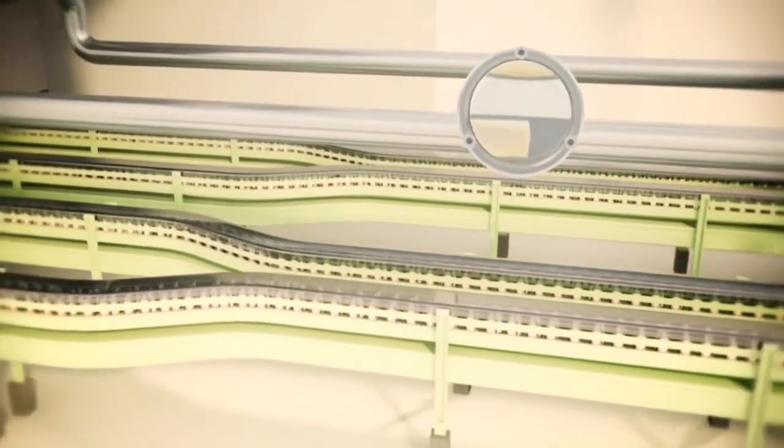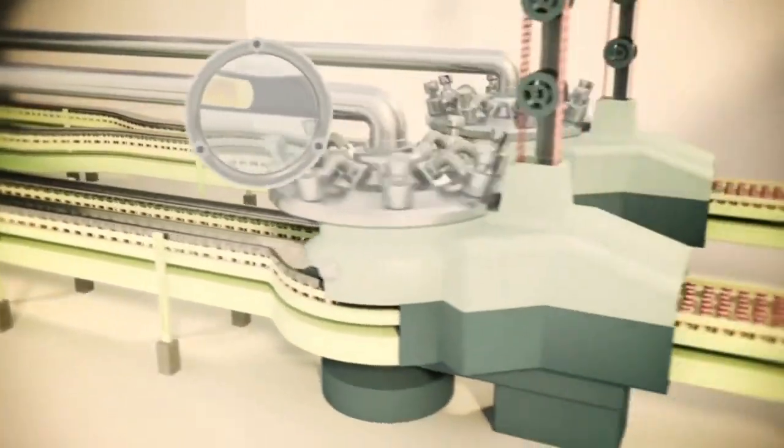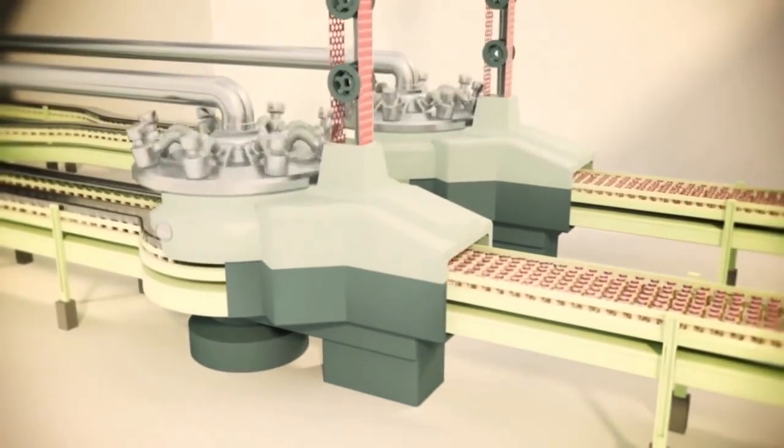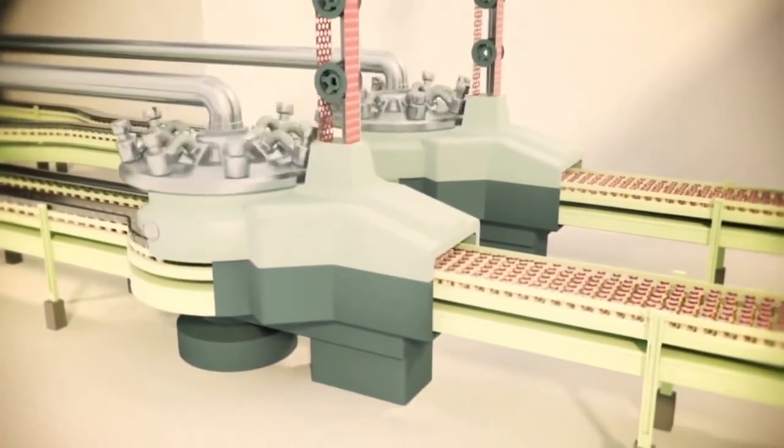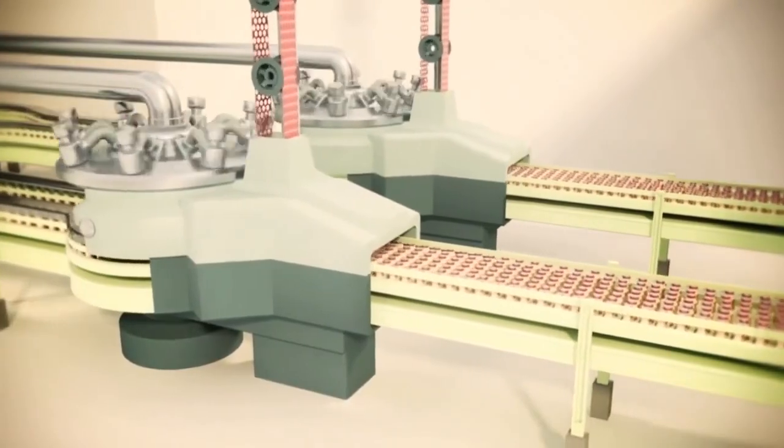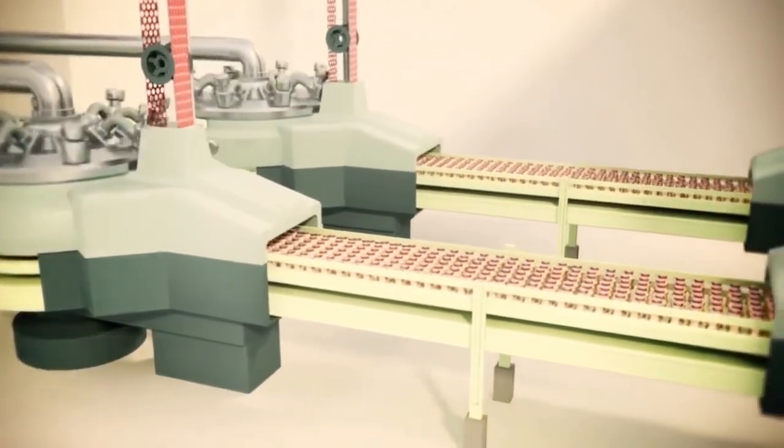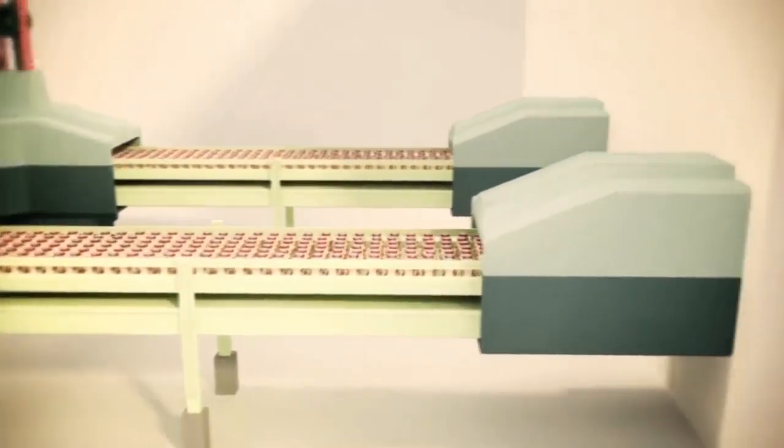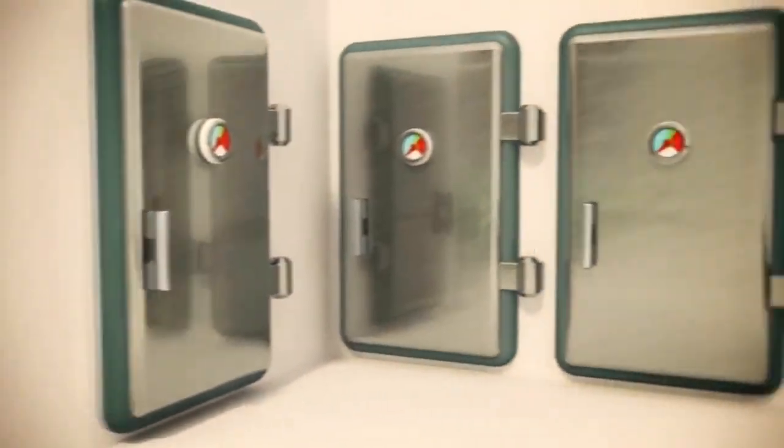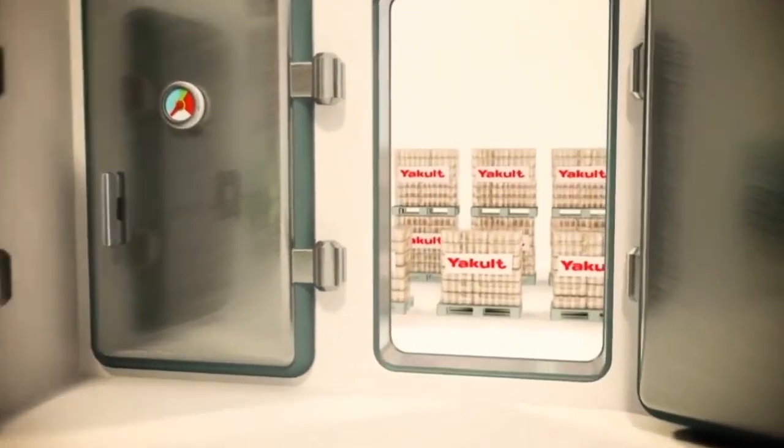Once that's done, the finished drink is poured into Yakult's iconic little bottles. It takes less than one tenth of a second to fill and close a bottle, after which they're packed in no time at all. Did you know 45,000 bottles can be filled and packed in just one hour?